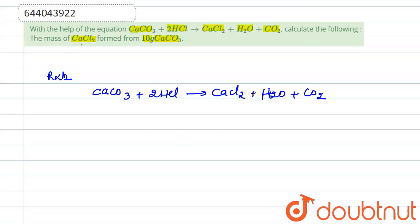Now, the question is saying the mass of CaCl2 formed from 10 gram of CaCO3. So let us calculate the molecular mass of CaCO3 first.